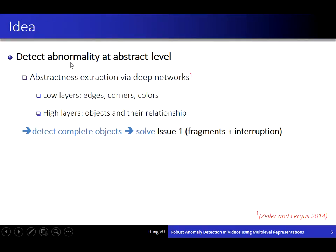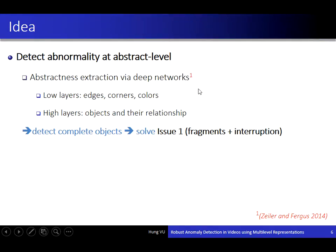To solve this problem, we propose to detect abnormalities at abstract levels. This abstraction can be extracted via deep convolutional networks, where low-level features represent low-level information like edges and corners, and high-level features can represent abstract concepts like objects and their relationships.